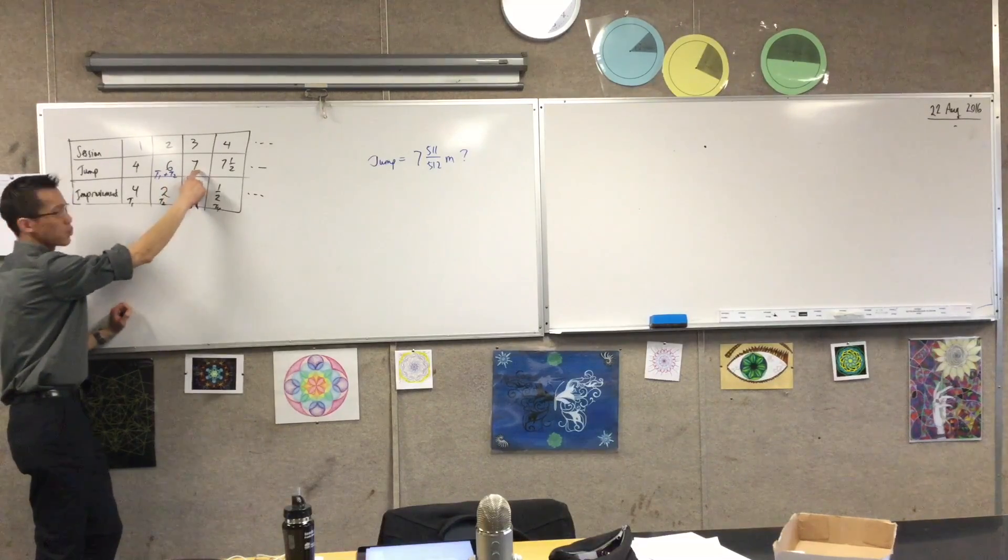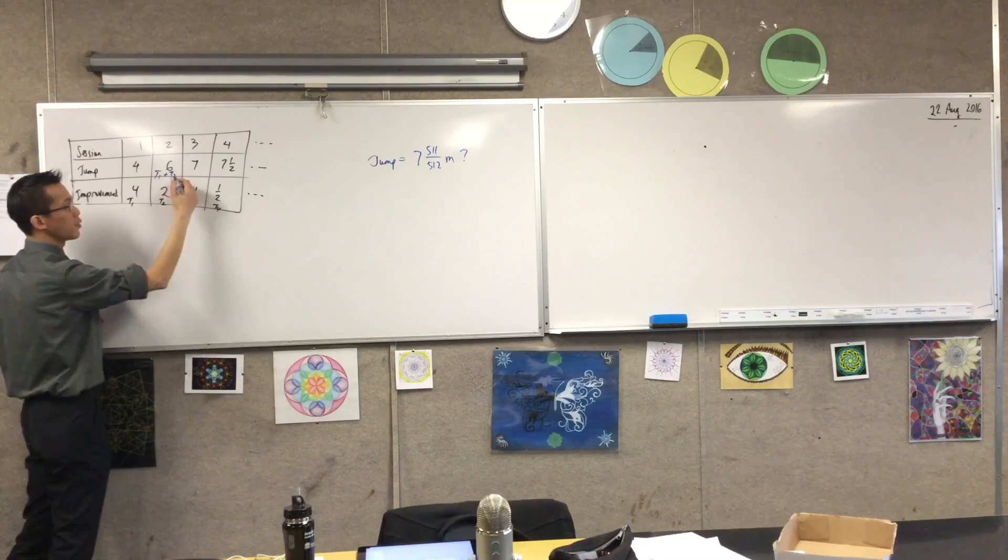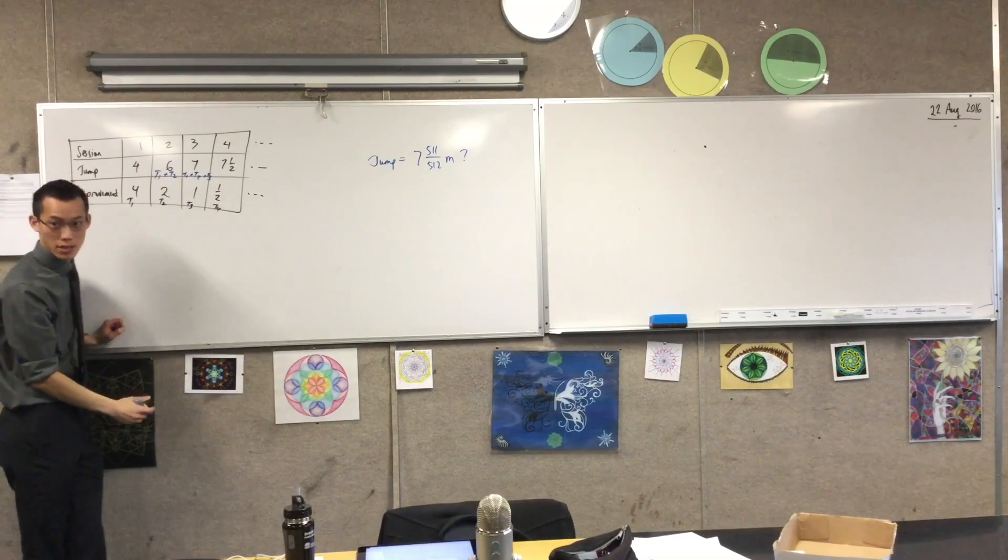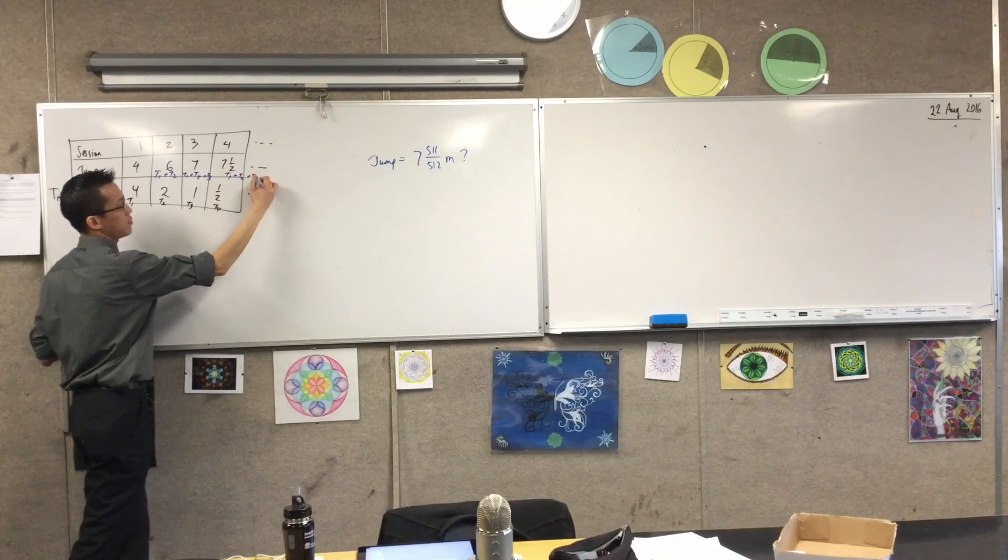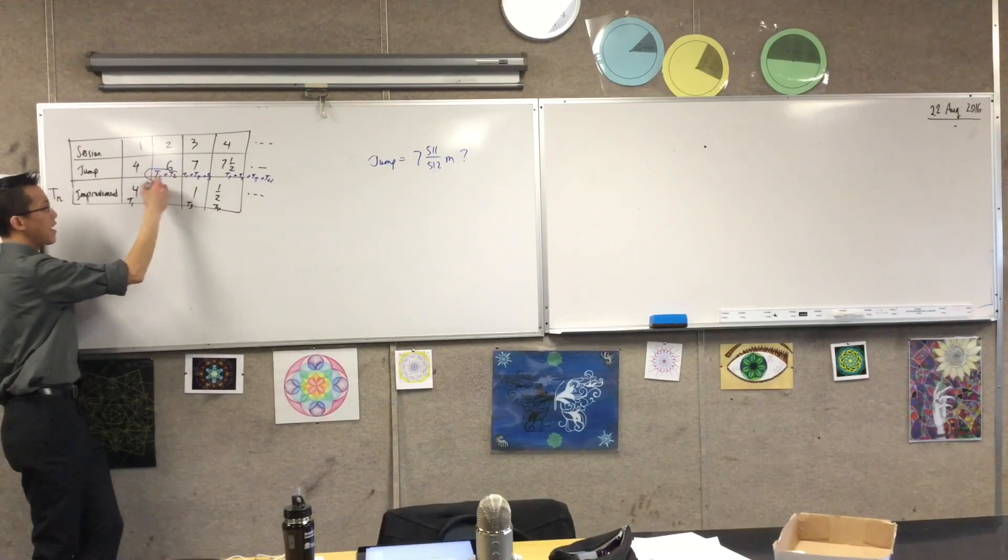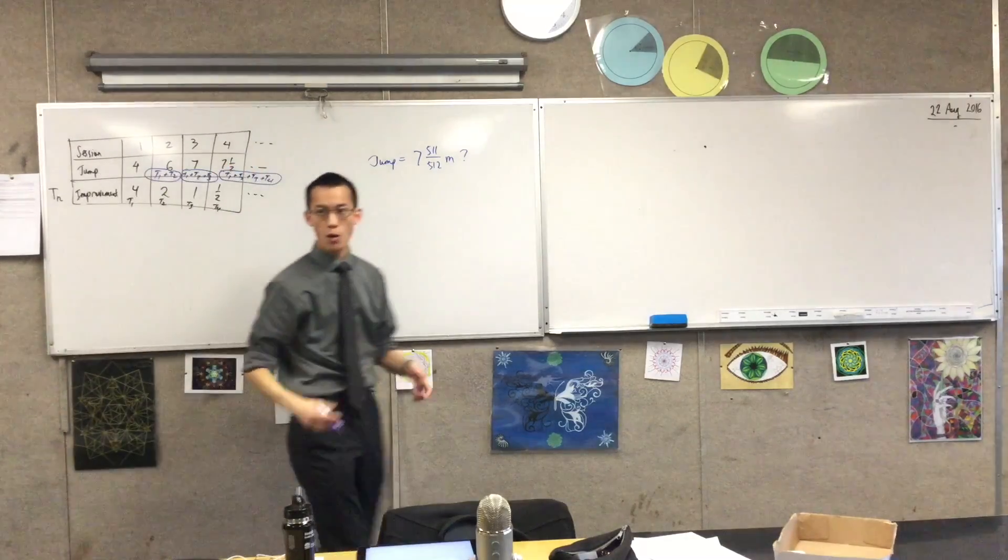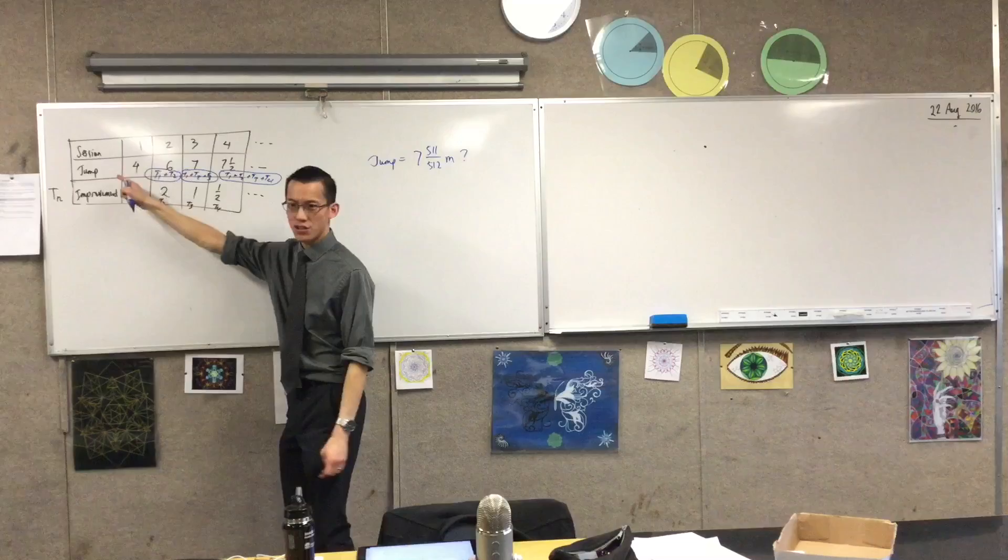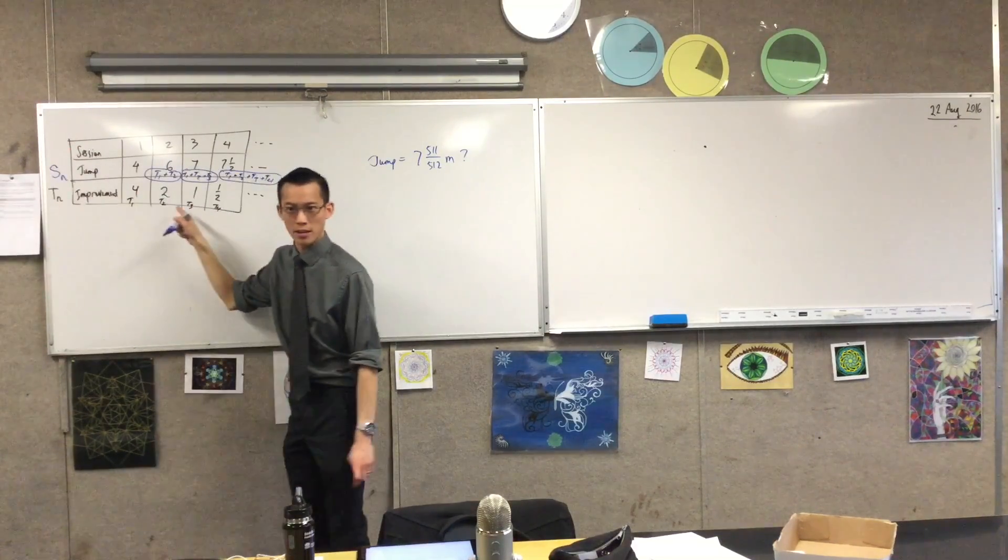When you have a look at the next one, you take this number and then you add whatever the next improvement is. So in fact, it's T1 plus T2 plus T3. That's what the 7 is, right? And by the same logic, I'm going to run out of space. But this is T1, T2, T3, and the most recent improvement. Now when you write it out in this way, it kind of becomes a little clearer that this second row, the actual distance he jumps, is not forming a GP. It's the sums of this GP. Does that make sense?